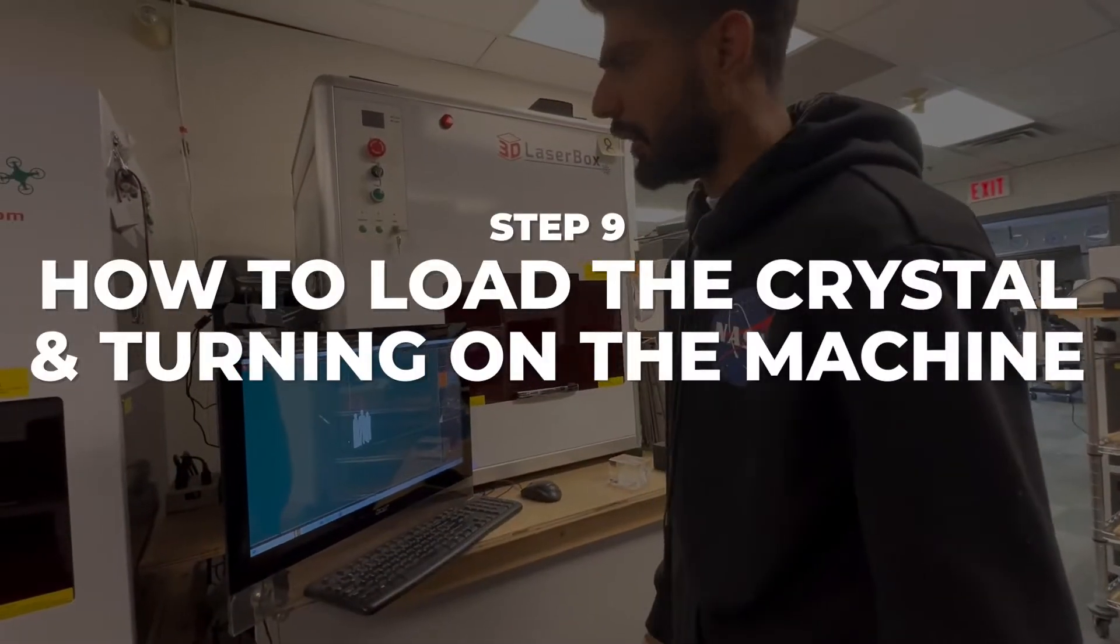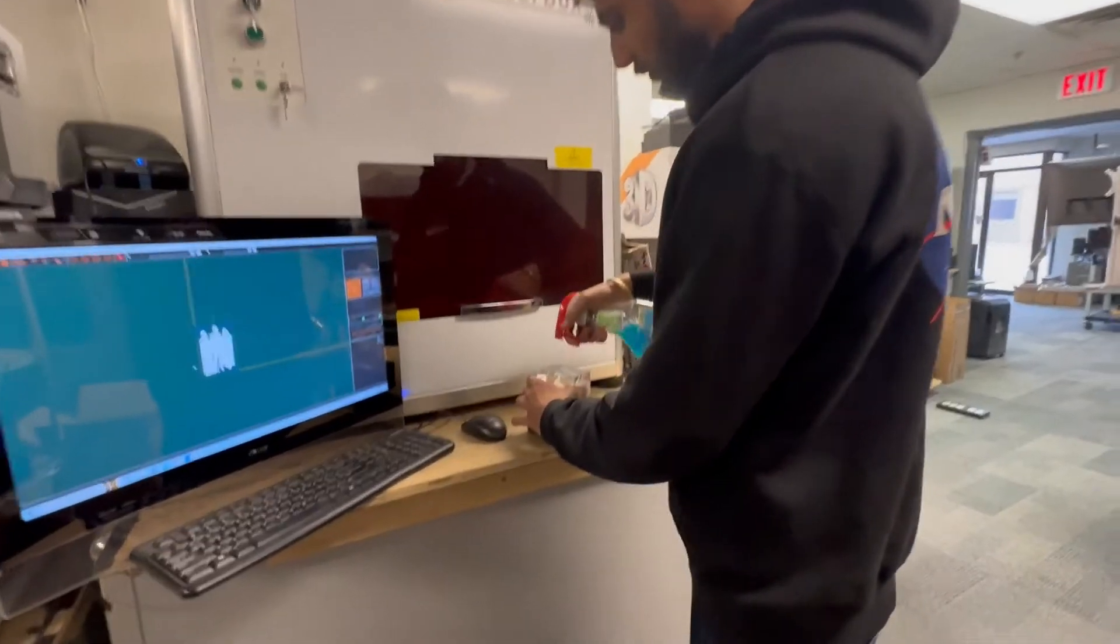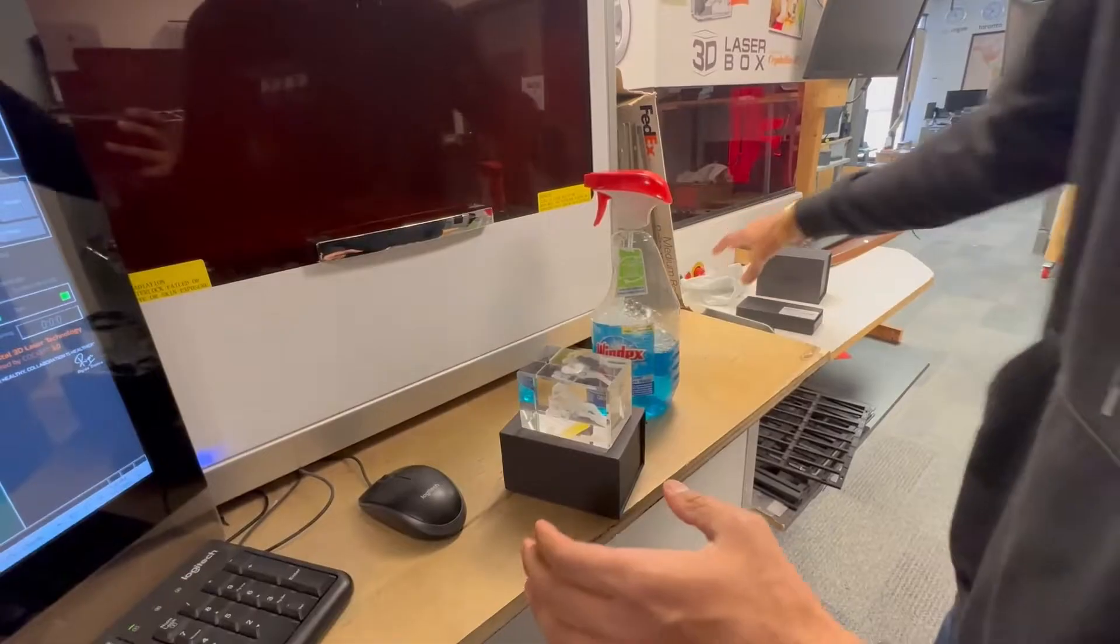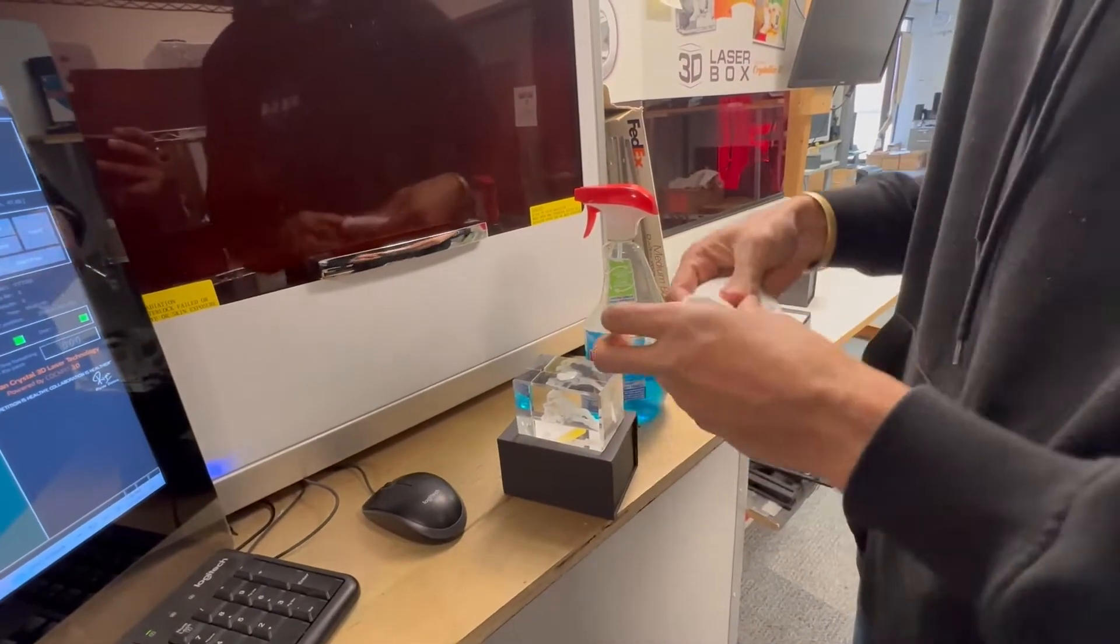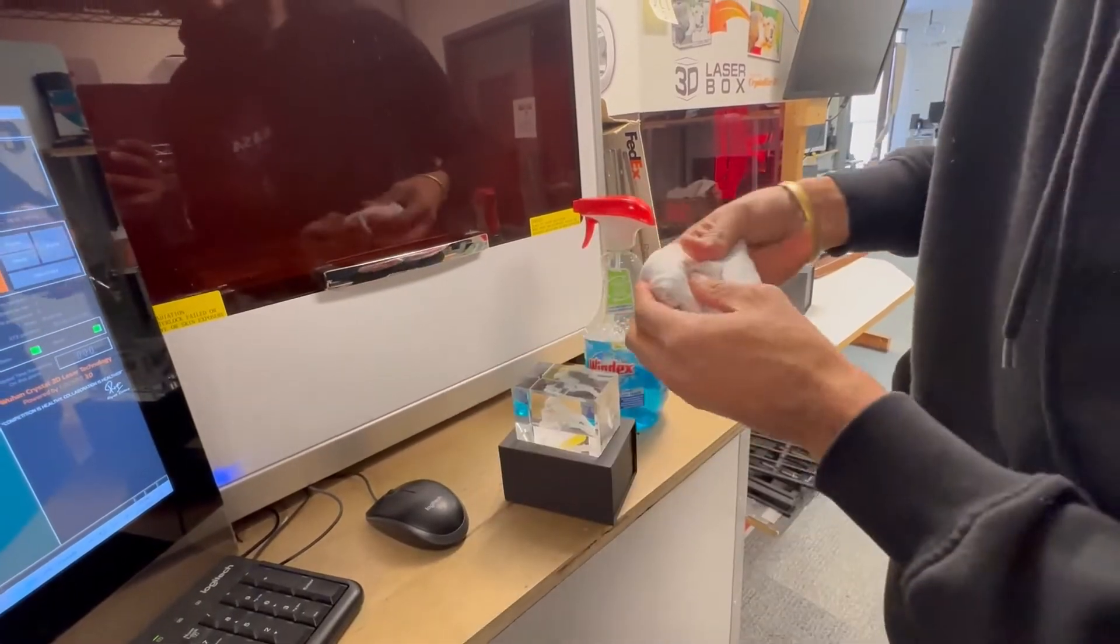Now in this video we're going to tell you how to burn your crystal. First we need to clean the crystal. For cleaning we are using Windex and one clean coat. Now rub the top area.